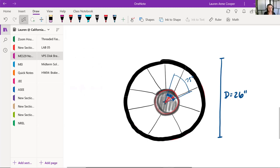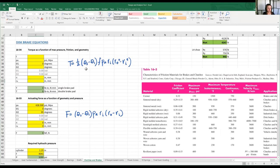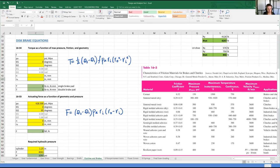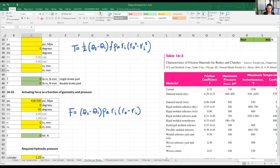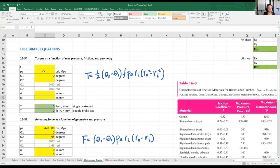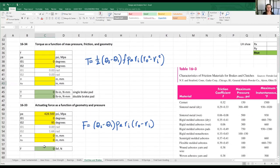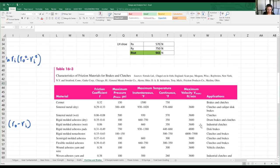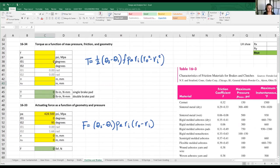Let's see what to enter into our tool. You'll need two equations: 16-34 is torque as a function of max pressure, friction, and geometry. Here is the equation and here it is in my tool. Then the actuating force as a function of geometry and pressure. Just like axial clutches, the torque is only for a single pad. We have rigid molded asbestos pads, so I picked the application for disc brakes.